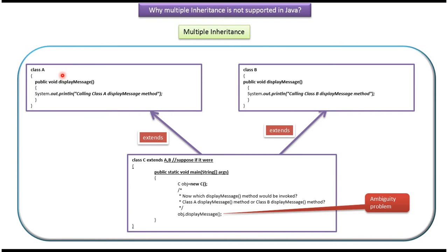Here you can see class A. Class A has a displayMessage method. And here you can see class B, which also has a displayMessage method.